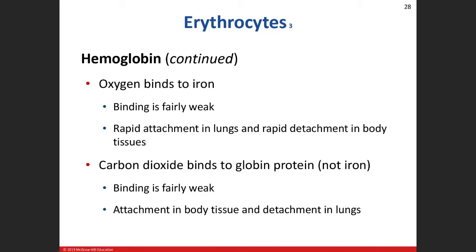We do need magnesium. The ATP molecule has magnesium bound onto the last two phosphates, and you need magnesium to both synthesize and break down ATP molecules. Magnesium is involved in over 600 enzymatic reactions in your body, so if you're not taking magnesium, take it — it's very important.